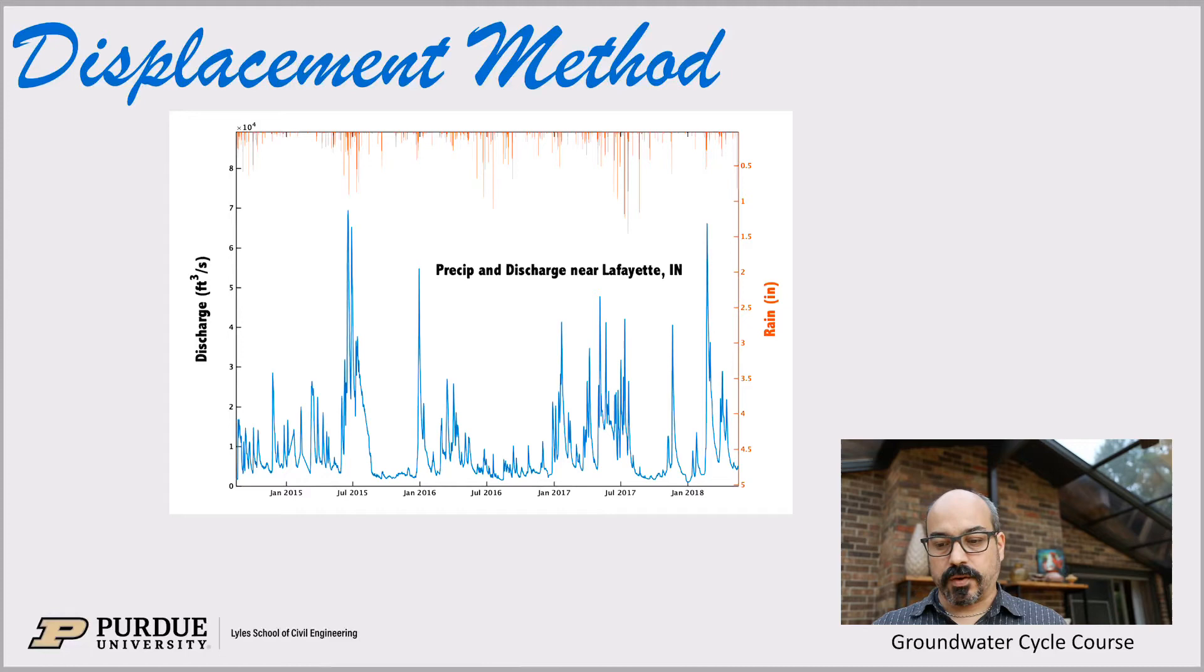And then at the top those orange bars are the rain events. And you can see the correlation of course between rain and discharge. So when it rains there's more flow in the river.